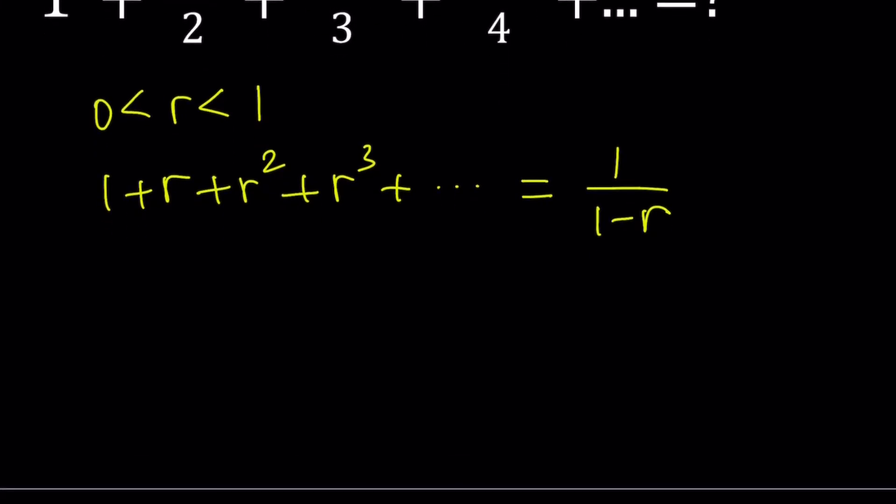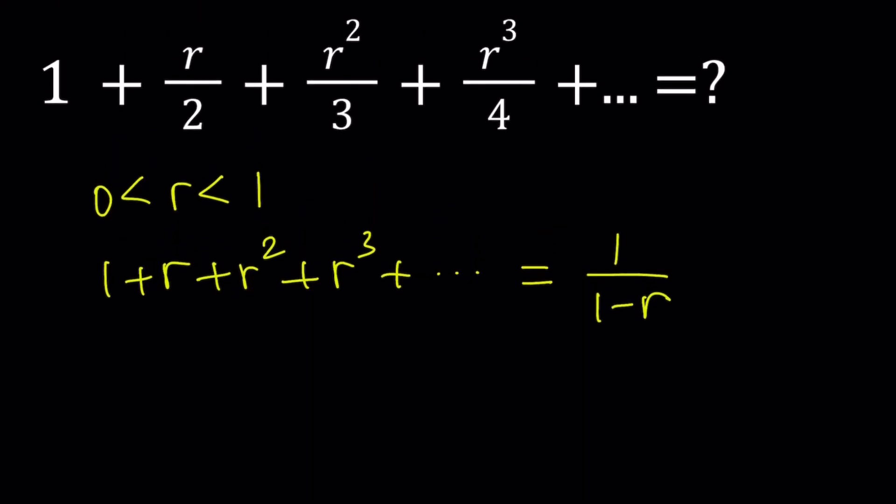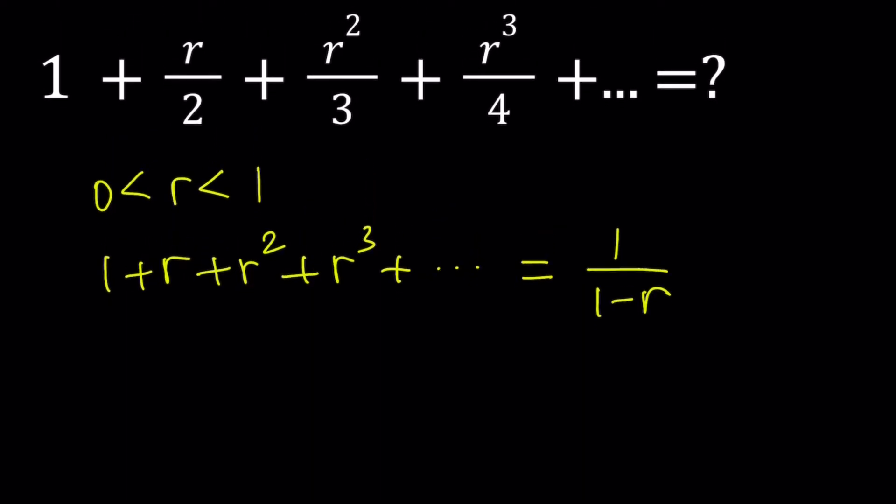So how can I get the expression that I want from an expression like this? For example, one of the techniques that we used earlier was differentiating, right? If you differentiate this, take the derivative, you're going to get 1 plus 2r plus 3r squared, but that's not good because we kind of need division. We're dividing by 2, by 3, by 4. Here it's multiplication. So I have to do the opposite. I need numbers at the bottom. What is the opposite? Integration. Exactly.